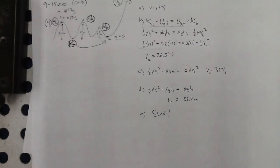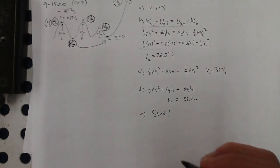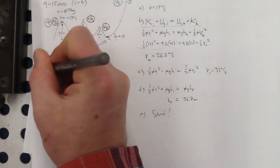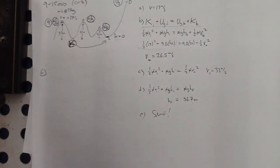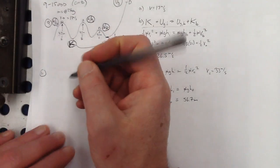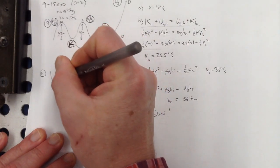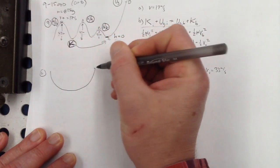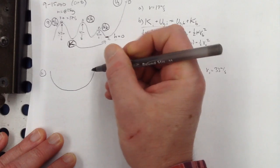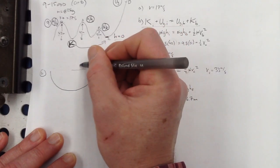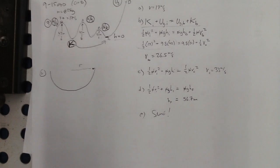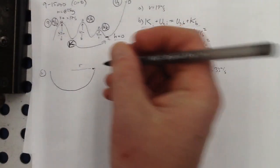That's how you do conservation of energy problems — no springs in that yet. Number 11: the old ice flake in a bowl. The bowl has a radius R of 22 centimeters, and the mass of the ice flake is 2 grams. But thinking ahead, since there are no springs, the mass is going to cancel out.